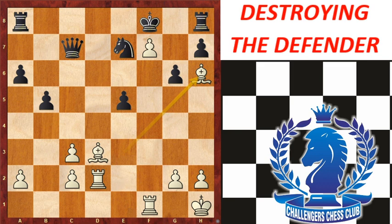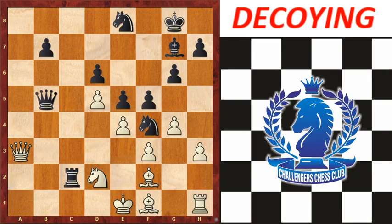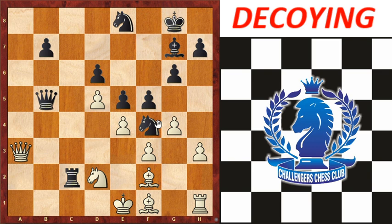The next topic is decoying. Decoying means to force the opponent's piece to move from its current square to a specific square of your choice. In this position, Black is exerting tremendous pressure on White with its queen, rook, and knight. It seems that mate is not far away by Rc1, but the only piece preventing the mate is the white queen on a3. By decoying, Black can achieve its goal.